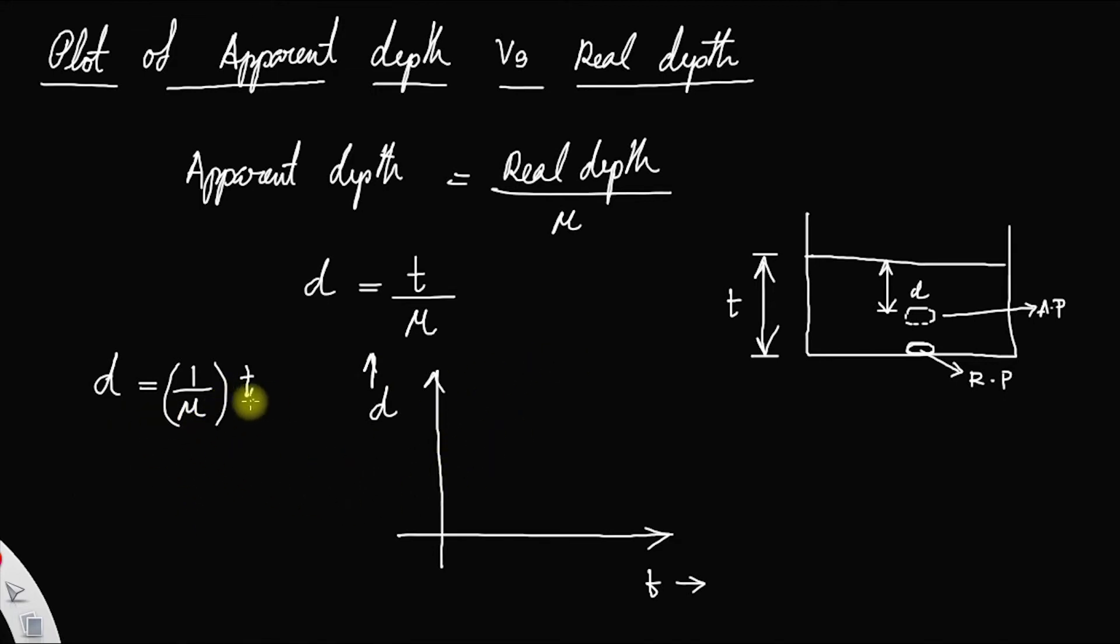You can see that if t is equal to 0, d is also 0, which means if the real depth is 0, substituting 0 here, you will get d as 0. So the graph passes through the origin definitely and it will be a straight line.